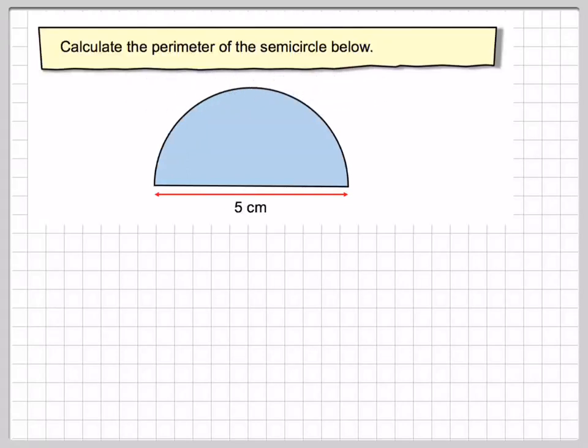Calculate the perimeter of the semicircle below. So we've got a semicircle here and we know the diameter of the semicircle is 5 centimeters. What we've got to do is find the distance around the whole outside of the shape.